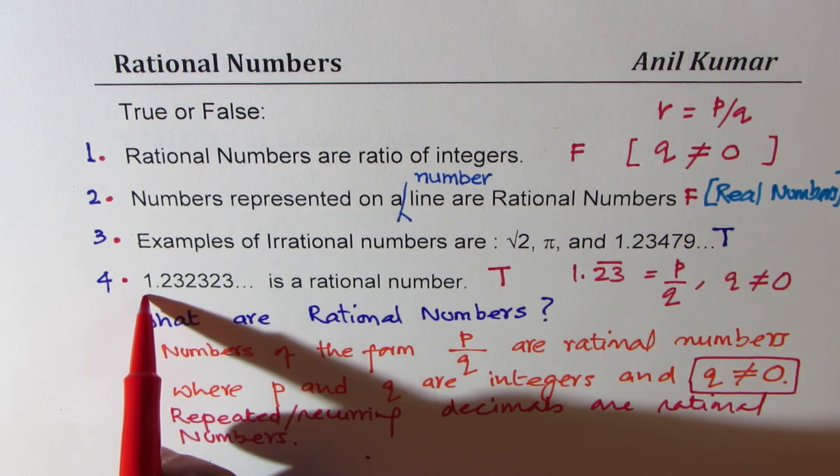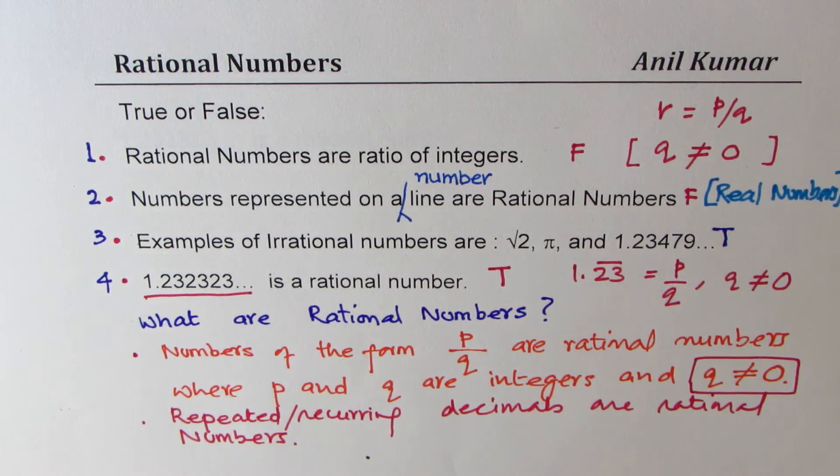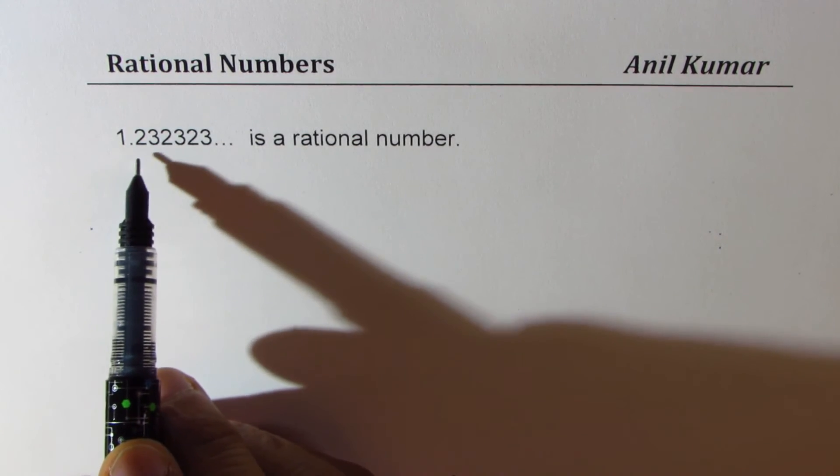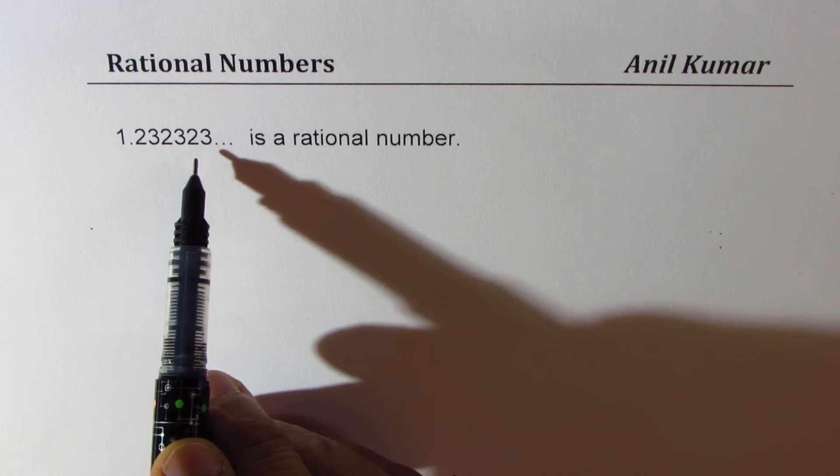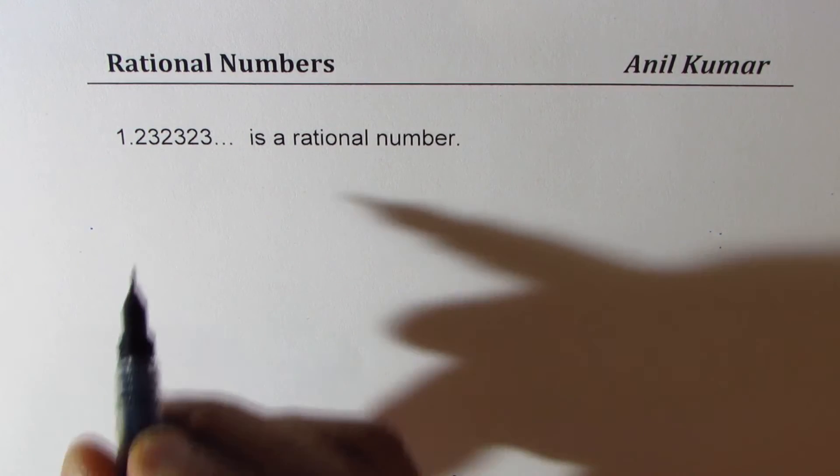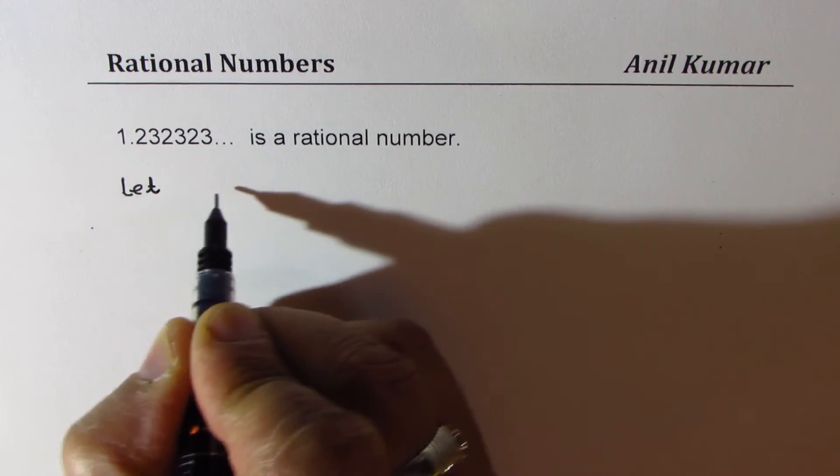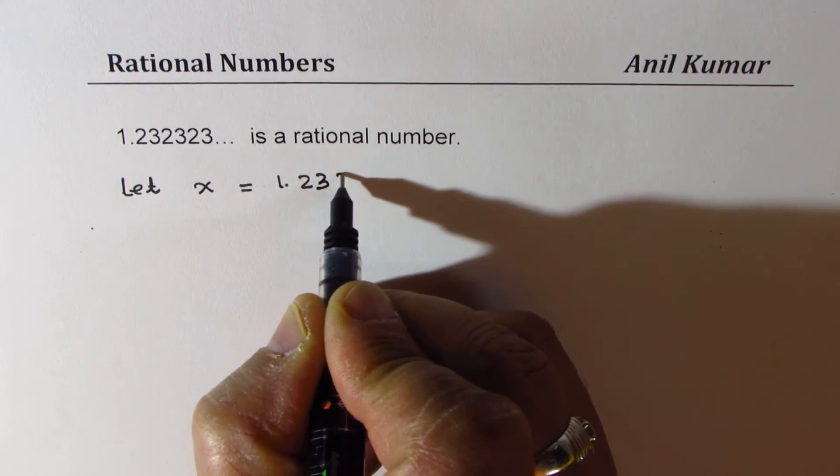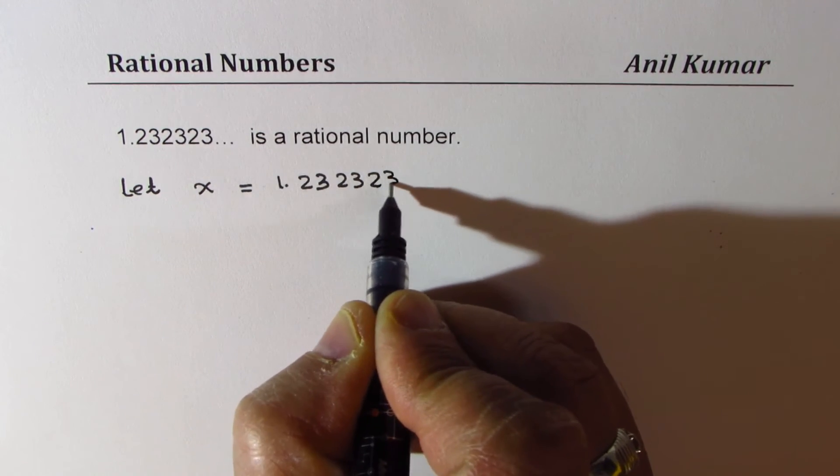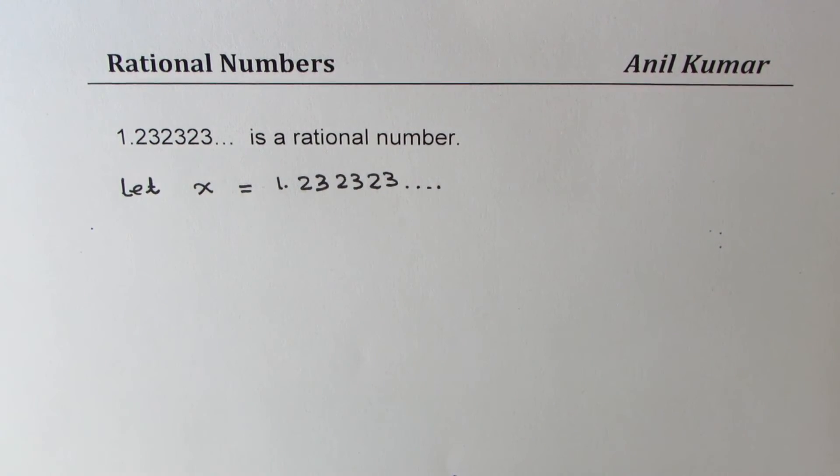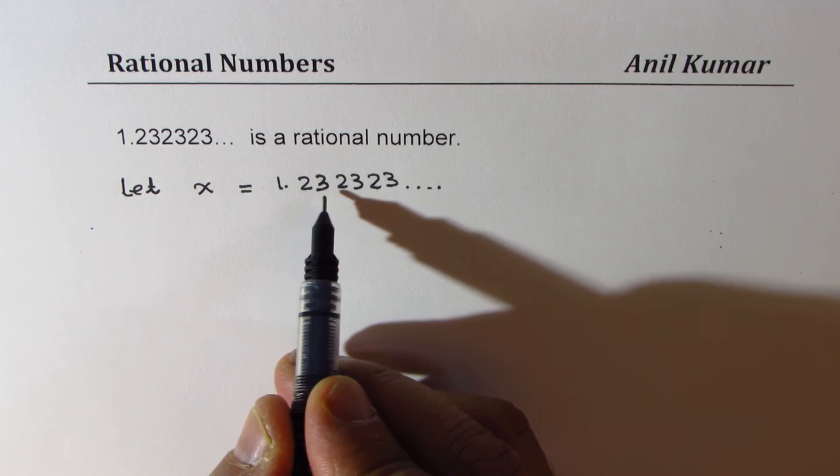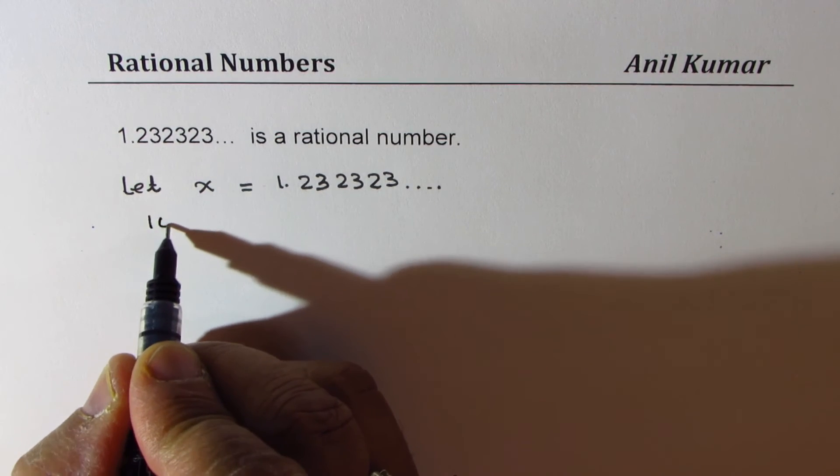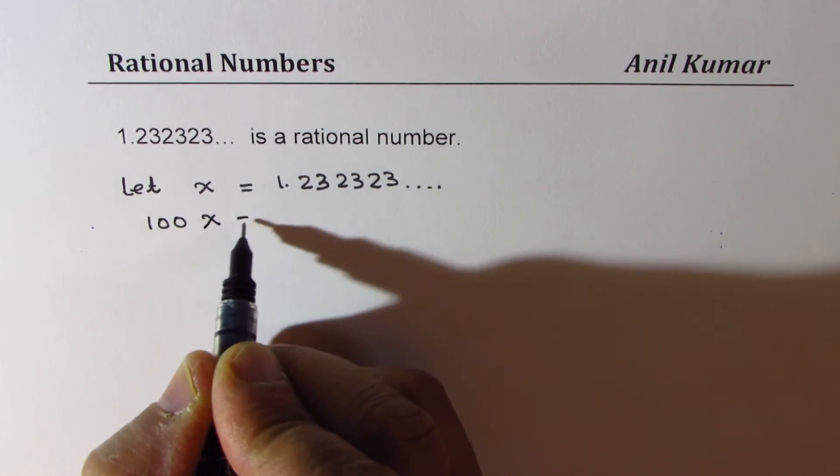Now, I'll show you how we could write this number in the form of a rational number. To write 1.232323 and so on, that is where 2, 3 is repeating as a rational number. Let us assume that x is equal to 1.232323 recurring. Now, in this case, 0.23 is recurring. So what we could do here is, we could multiply by 100. So if you multiply by 100 times x, we get a number which is 123.2323, correct?